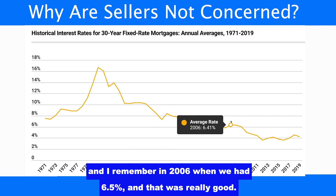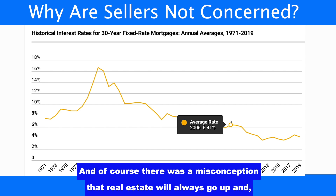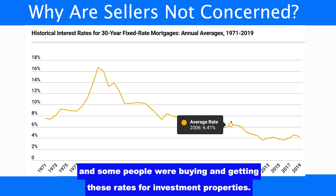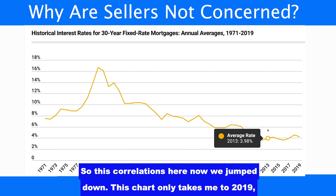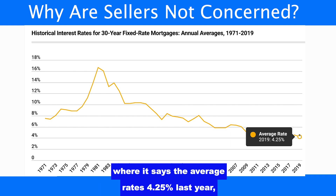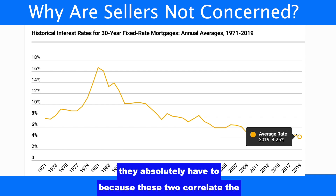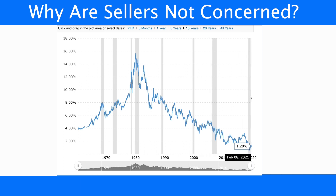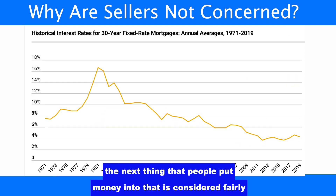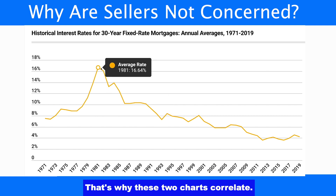I remember in 2006 when we had 6.5% and that was considered really good. We did a ton of real estate that way. Of course, there was a misconception that real estate will always go up. Some people were buying investment properties at these rates — that's a whole different video. But right now, look at this correlation. This chart only takes me to 2019 where the average rate is 4.25. Last year it was in the threes — even some rates in the high twos. Rates absolutely have to rise because these two charts correlate.